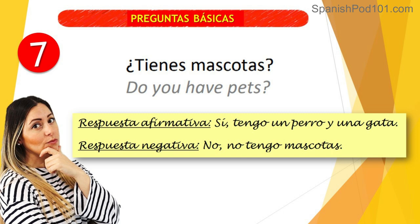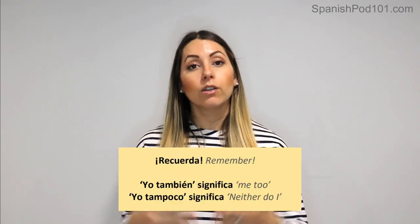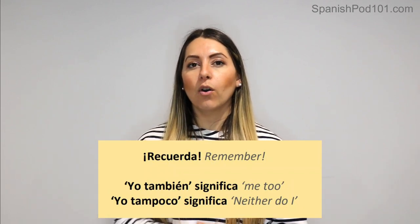The last question: '¿Tienes mascotas?' — Do you have pets? 'Sí, tengo un perro y una gata' — yes, I have a dog and a female cat. If you have a male cat: 'tengo un perro y un gato.' Negative: 'No, no tengo mascotas.' For conversations — if you have something in common, instead of repeating it, say 'yo también' (me too). If you don't have something either, say 'yo tampoco' (me neither).